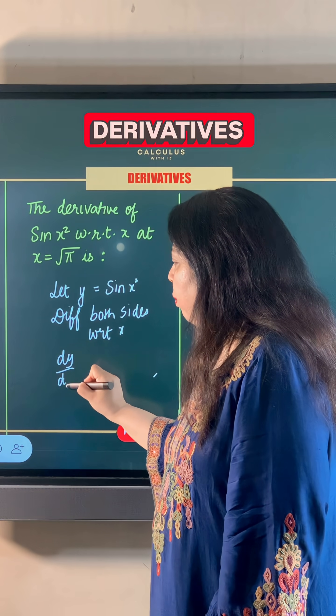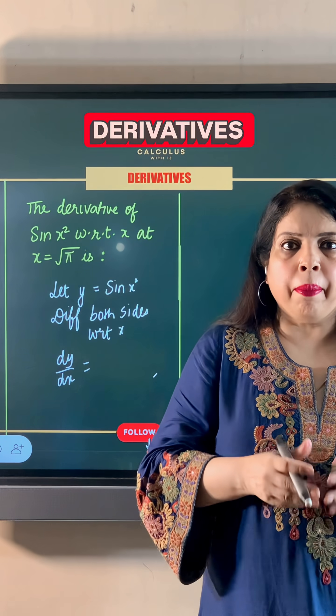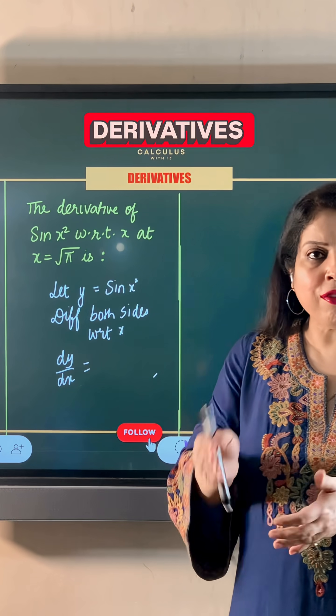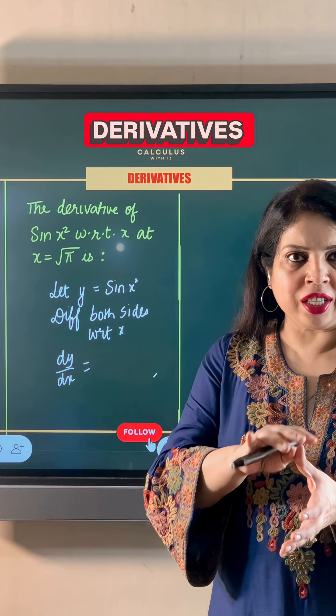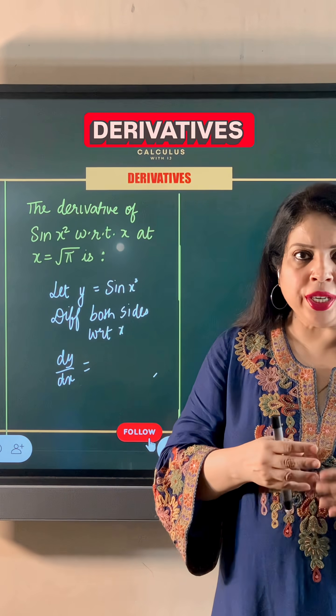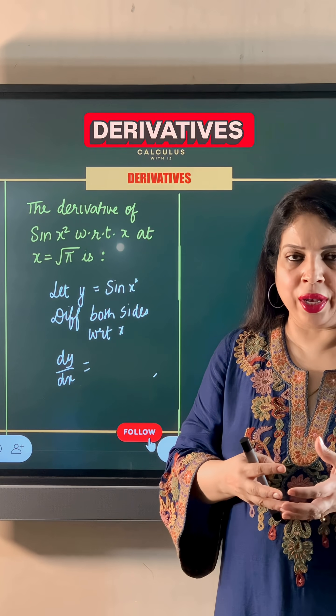The derivative of sin x is cos x. But instead of x, we have x² as the angle of sin. So according to the chain rule, we also need to take the derivative of x².